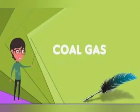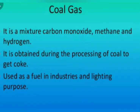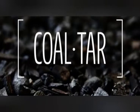Next is coal gas. Coal gas is also obtained by destructive distillation of coal. This is an inflammable gas and we can convert it into diesel. Coal gas is a mixture of carbon monoxide, methane and hydrogen. When we produce coke and process coal, coal gas is also obtained in industries — it is used for lighting purposes.